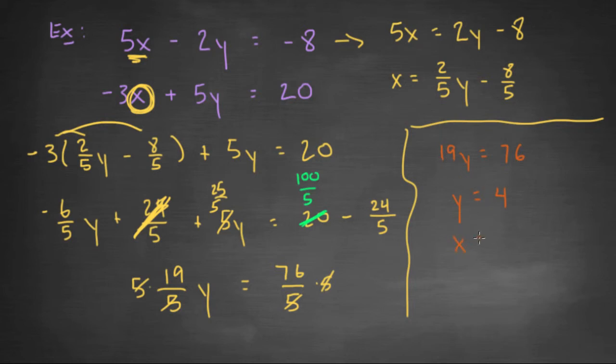Then we also need the x that goes with it. Pick any old equation, it doesn't matter which one you use, let's just try maybe this one right here. If y is 4, 2/5 × 4 = 8/5, 8/5 - 8/5 gives us 0. So there's your ordered pair (0, 4), that would be your solution.